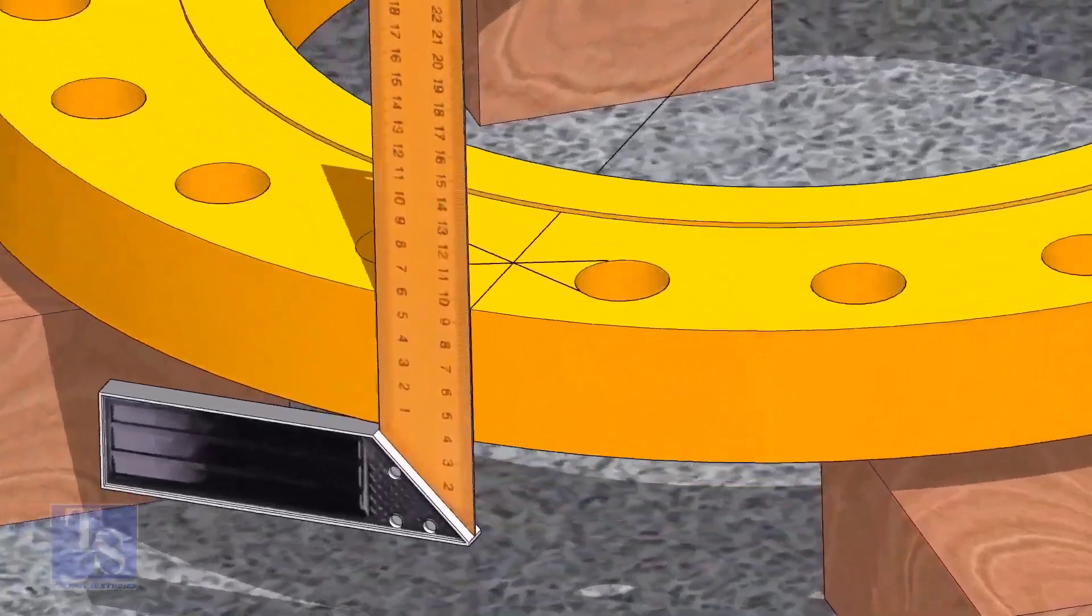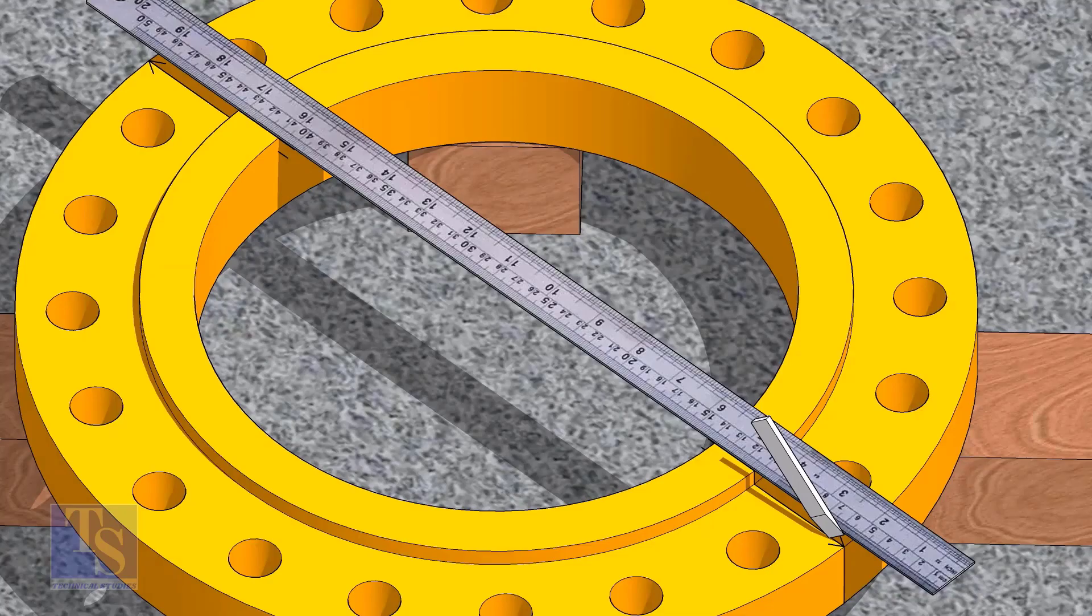Now, transfer the center line to the sides of the flange. Overturn the flange and transfer the center line on the back side of the flange.